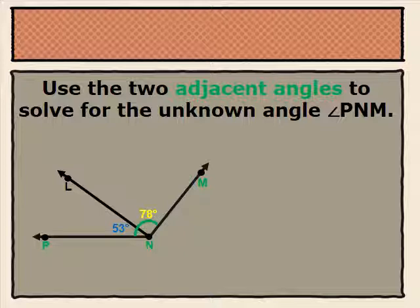Because of that, we are able to tell what the measure of angle ENM is by adding both angle LNM, 78 degrees, and angle ENL, 53 degrees. By adding the two angles together — angle ENL and angle LNM — we see that 78 degrees plus 53 degrees gives us a total of 131 degrees. So the measure of our unknown angle, angle ENM, is 131 degrees.